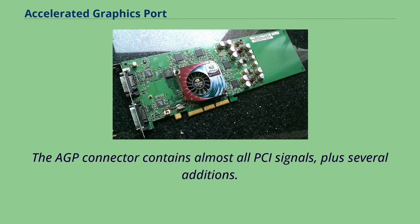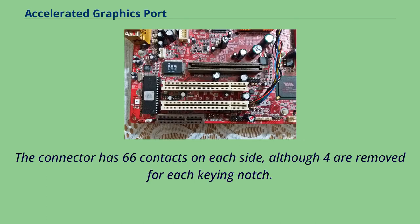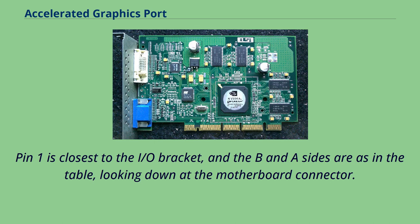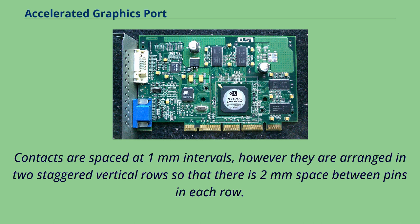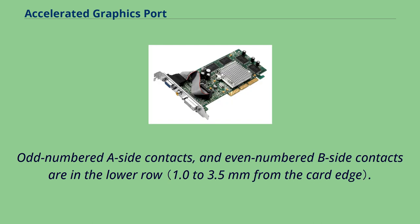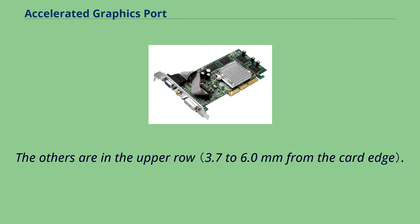The AGP connector contains almost all PCI signals, plus several additions. The connector has 66 contacts on each side, although four are removed for each keying notch. Pin one is closest to the IO bracket, and the B and A sides are as in the table, looking down at the motherboard connector. Contacts are spaced at one-millimeter intervals; however they are arranged in two staggered vertical rows so that there is two-millimeter space between pins in each row. Odd-numbered A-side contacts and even-numbered B-side contacts are in the lower row; the others are in the upper row.